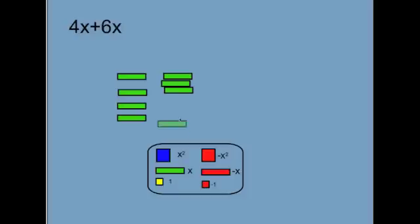The first example we'll try today is 4x plus 6x, and all we're going to do is try to model that first. So we'll start with 4x, which means we'll need 4 of these, and we're going to add that to 6x, so we'll need 6 of these. And that will give us 4x plus 6x.